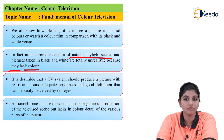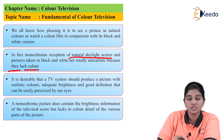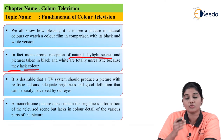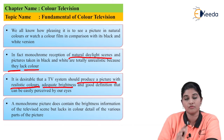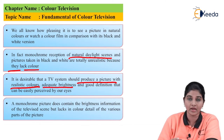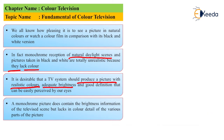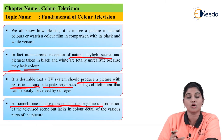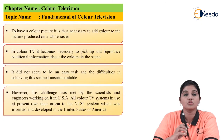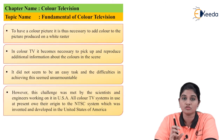It is very important to invent a system that can produce a picture with realistic color, adequate brightness, and good definition, so that it can be easily acceptable to the human eye. A monochrome picture contains only information about brightness and does not contain any information about the color of the picture. To have color information in the picture, it is very important to capture the color of the picture.